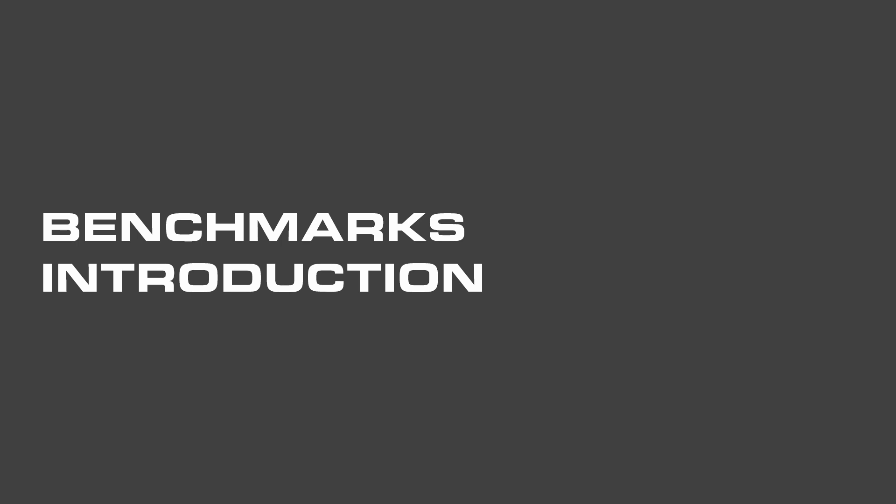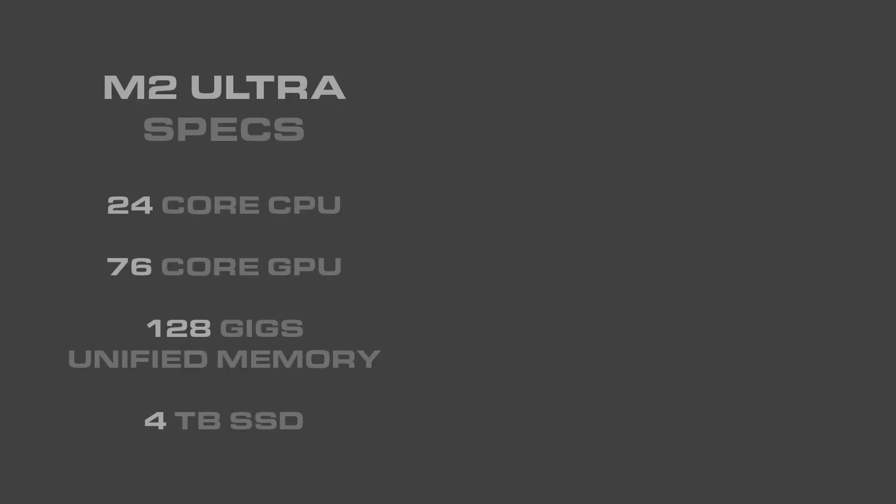Here is a list of the specs of the two computers we are reviewing today. We have the M2 Ultra Mac Studio that we've had for the last 18 months. It has a 24-core CPU, 76-core GPU, and 128 gigs of unified memory.